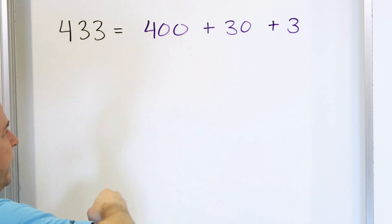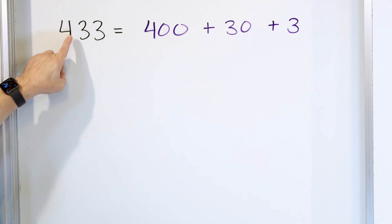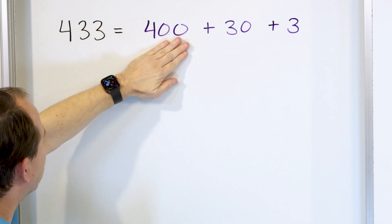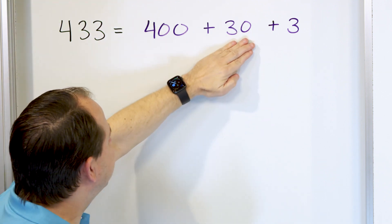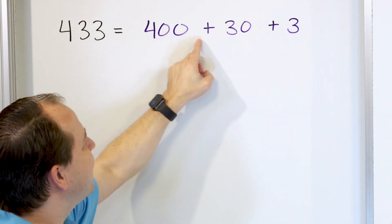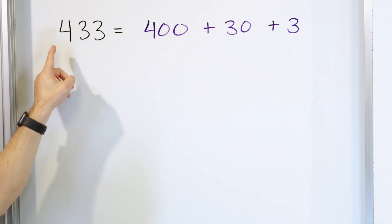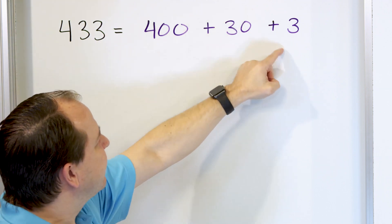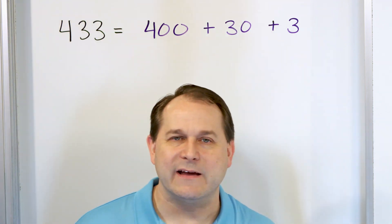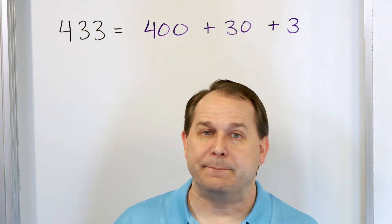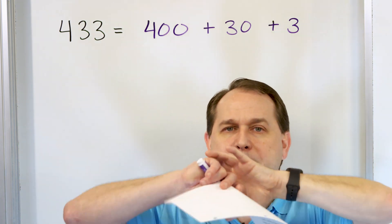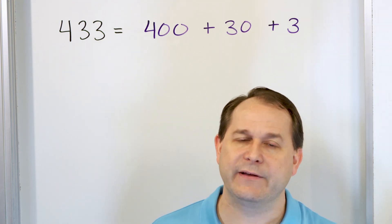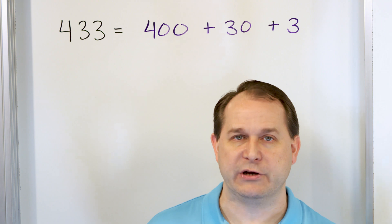So this is what we call expanded form. All it means is you take every digit of your number and you write down the value of that digit. Here it's 400, then the value of this digit which is 30, and the value of this digit which is 3, and you add them all together. So we know that this is 400 plus 30 plus 3. If you line them all up and add them, you're going to get 433. That's what it means — we want to take the digits and blow up the number so that we write down what every digit is worth, and then we add everything together. That's what we call the expanded form of a number.